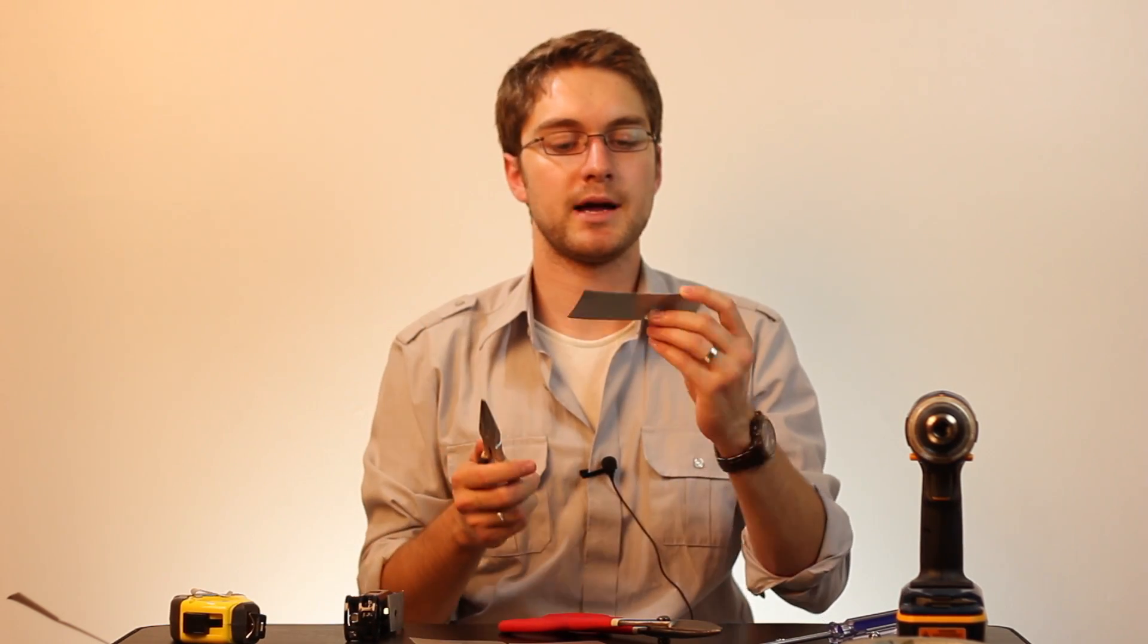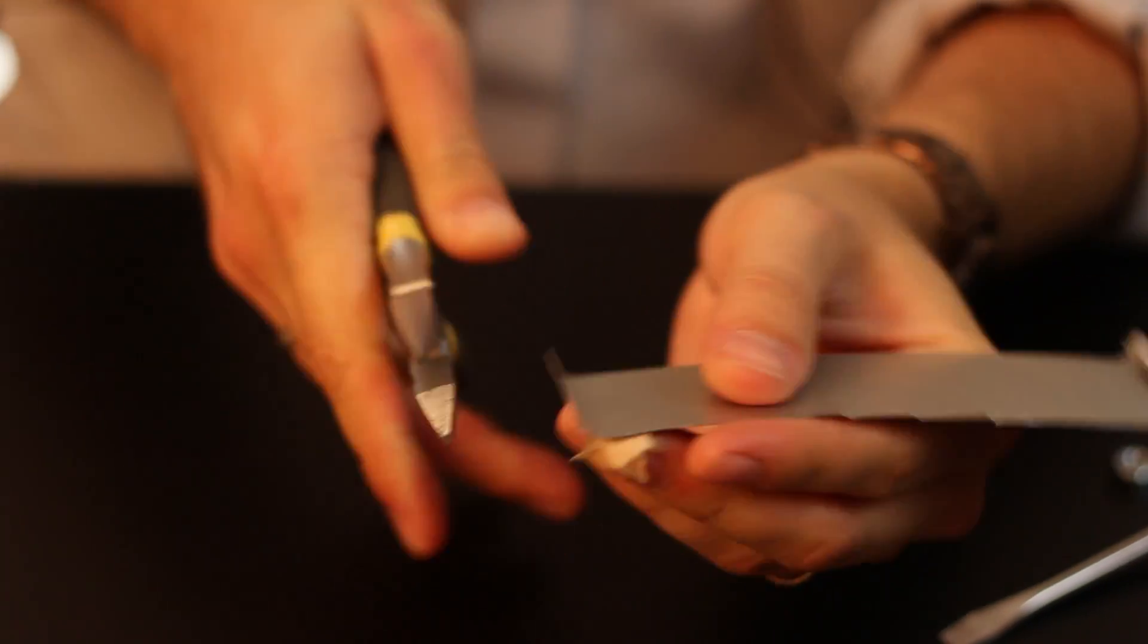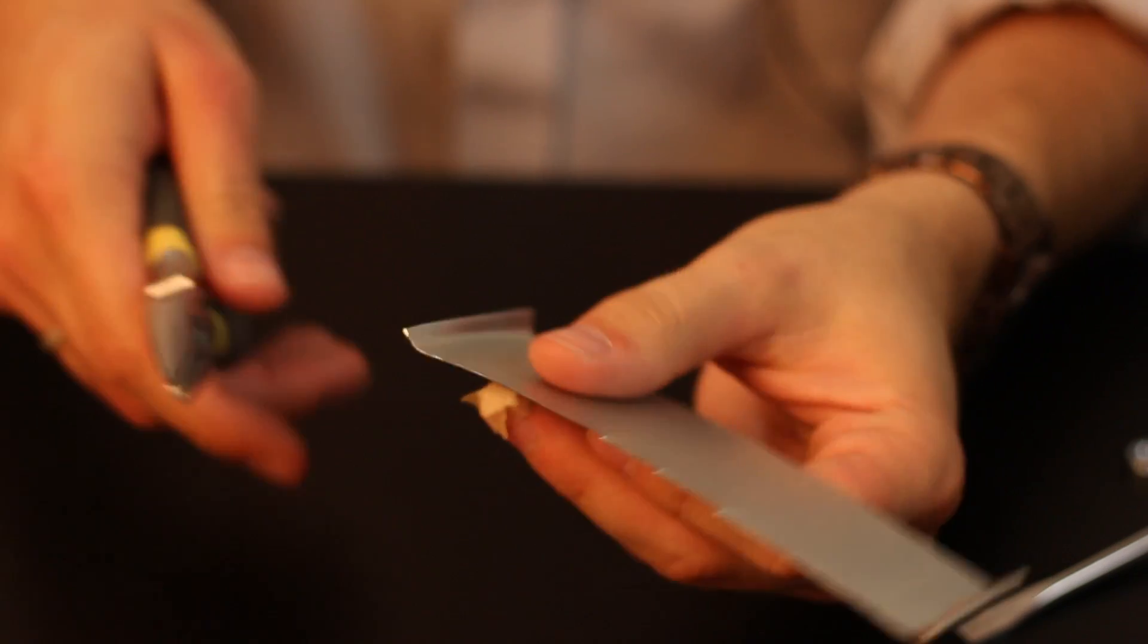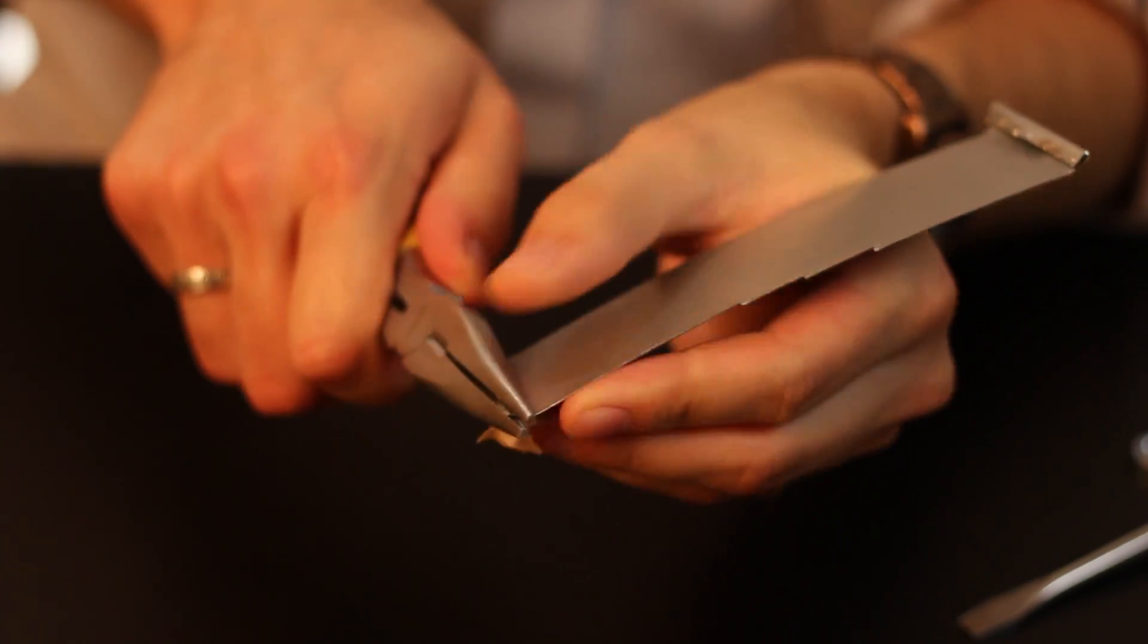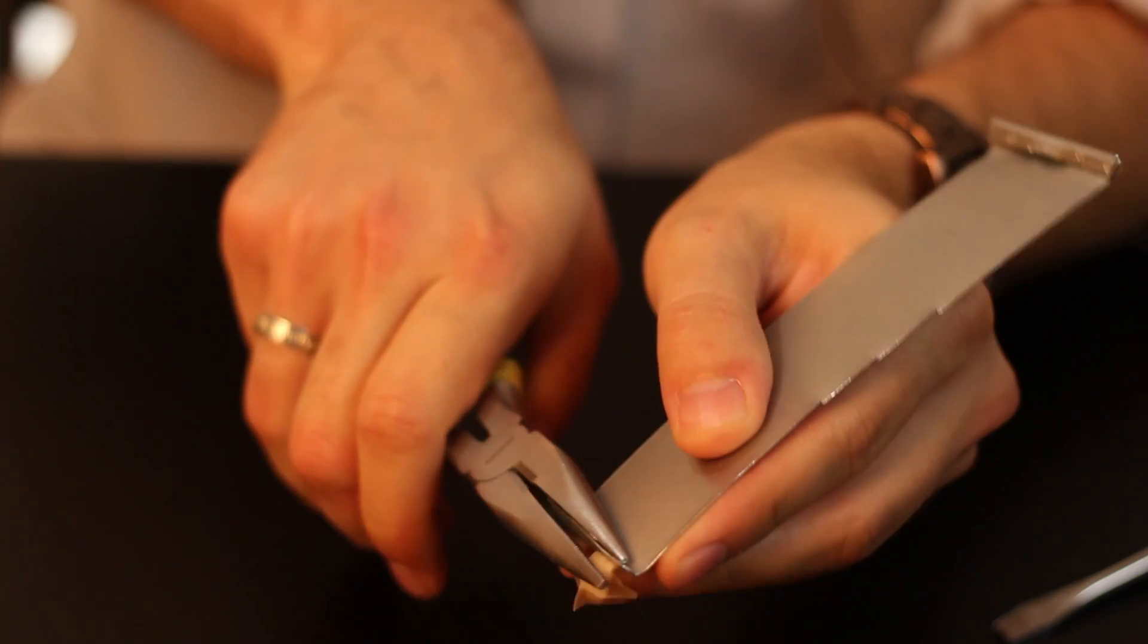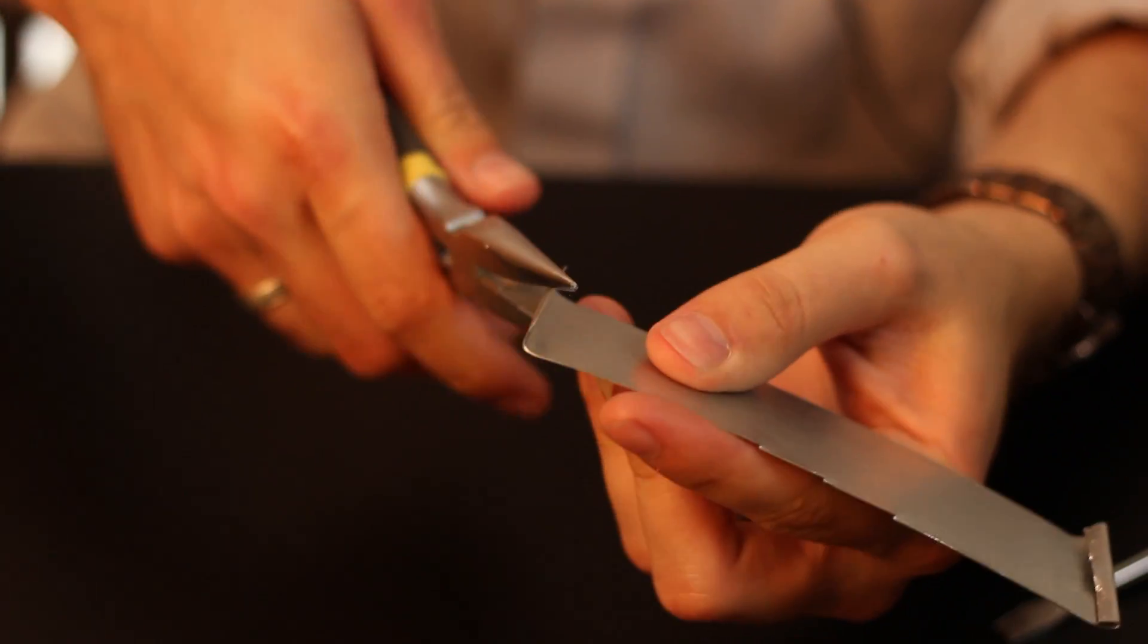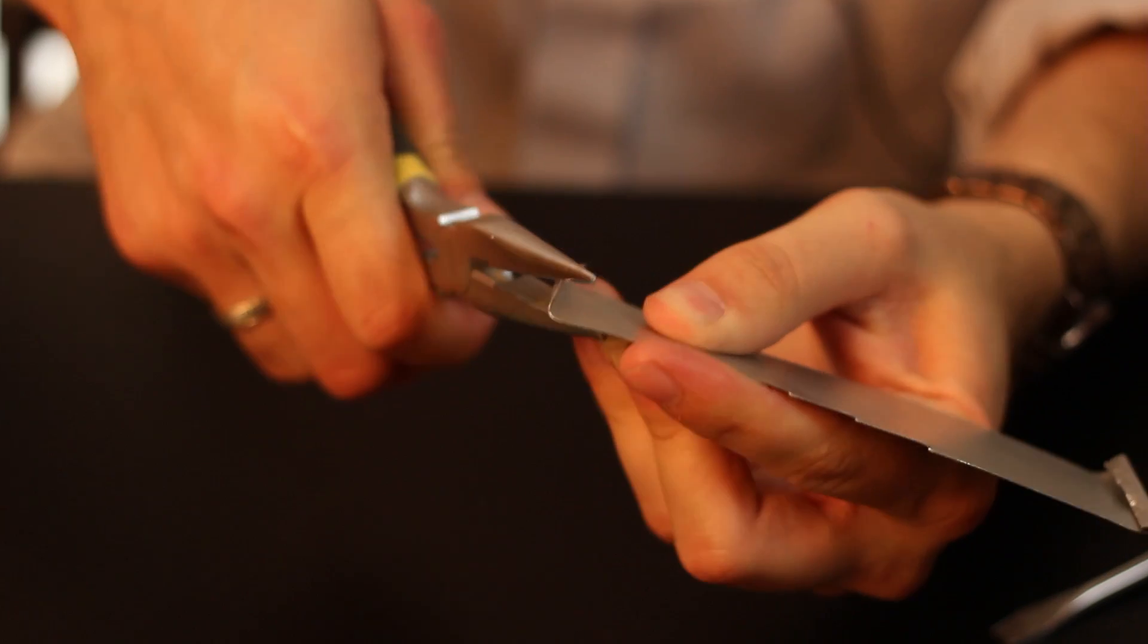Next we take our needle nose pliers and our strip of metal and we're going to bend the edge down a little bit on both sides. This does not have to be exact. We're just bending it down and this way nobody gets cut on our metal belt clip.